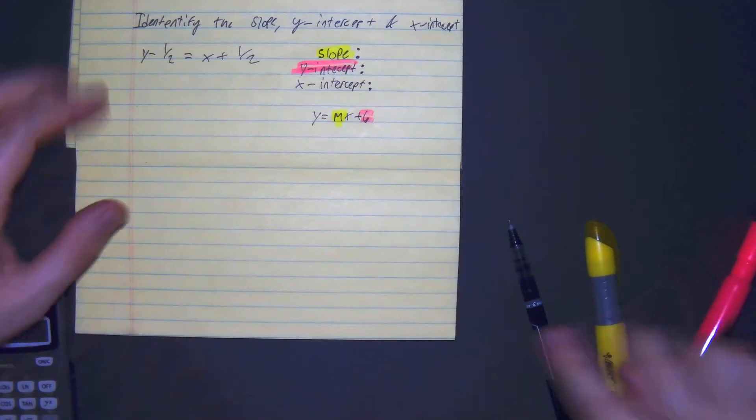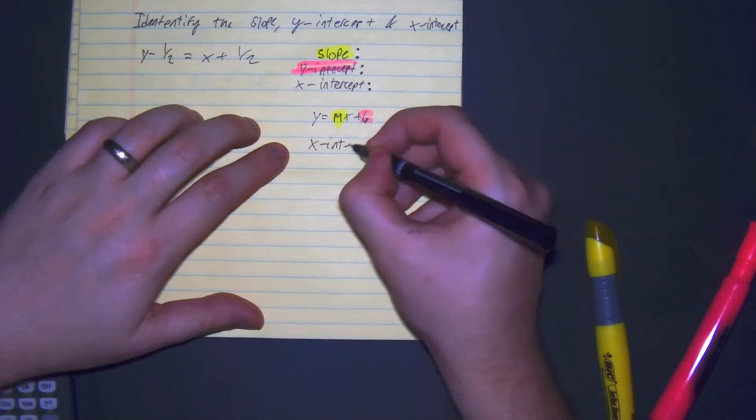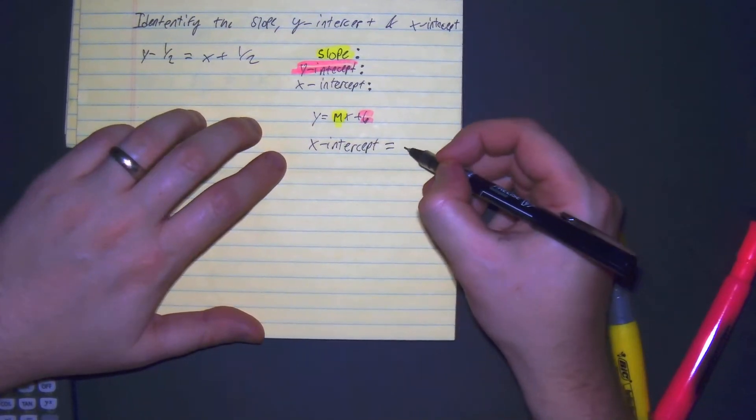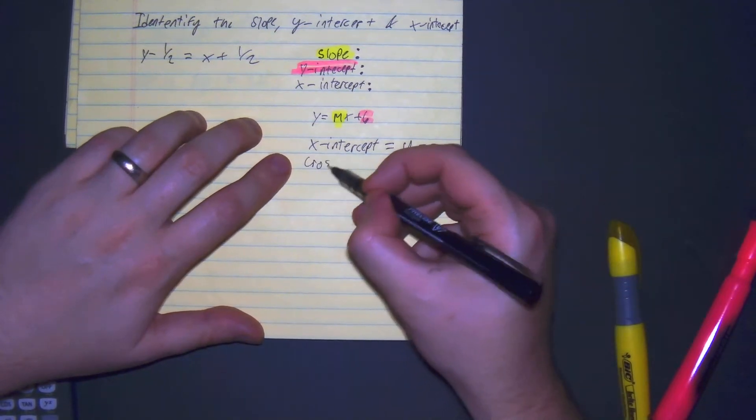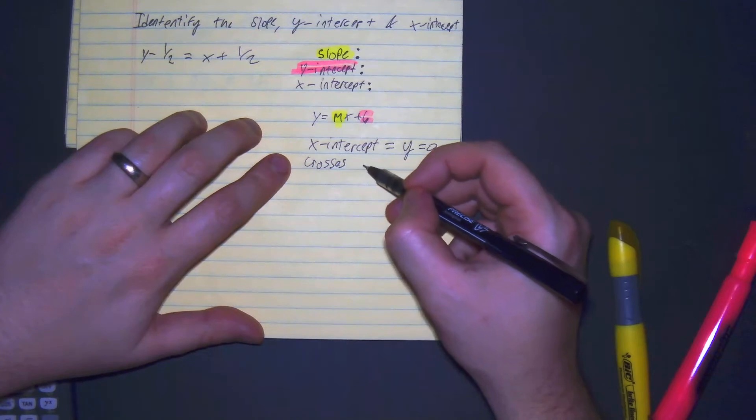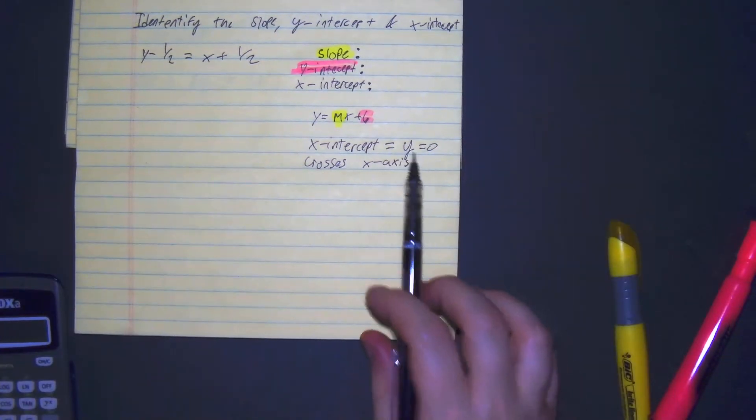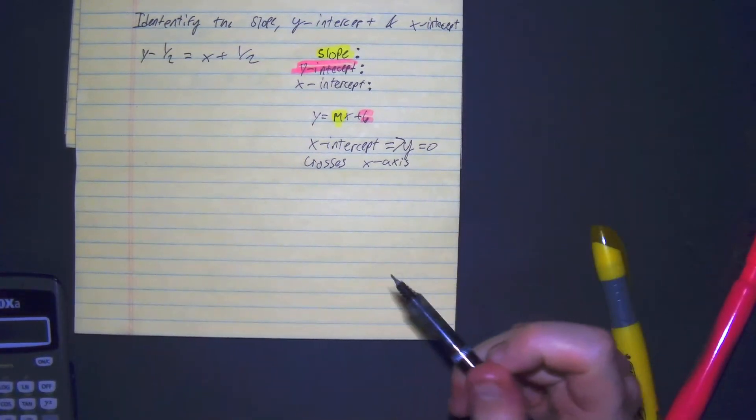and our x-intercept is given in here when y equals 0. So when it crosses the x-axis, all right? So we just have to make y equals 0 to find it.